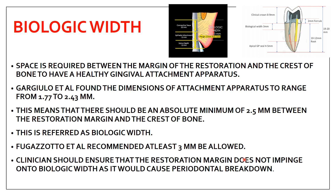The clinician should ensure that the restoration margin does not impinge on the biologic width, as it can cause periodontal breakdown. Whenever you are doing crown preparation, the margin of preparation should not encroach on the biologic width - the space should not be less than 2.5 mm to have good gingival attachment. The biologic width is the space between the margin of the preparation and the crest of the bone, which should be at least 2.5 to 3 mm.